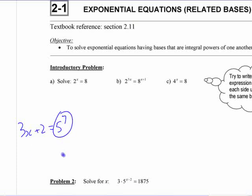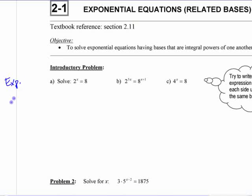That previous example is just a linear equation because you could write out whatever that value is. So the variable is the exponent - you might want to write that down somewhere. Sometimes we'll use this sheet directly, sometimes a blank page - it's up to you how you want to organize your notes. An exponential equation is where the variable is the exponent, or includes the exponent.